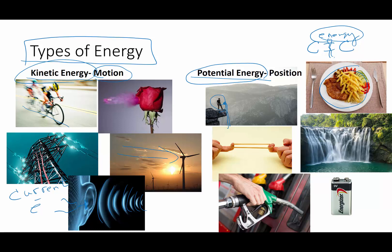Water going down over a cliff or waterfall has potential energy due to its height. As the water falls, it can be used to run a hydroelectric dam, a turbine, or a water mill. A stretched rubber band contains a lot of energy — you let it go, it'll snap back and hurt your finger. There are lots of elastic things that store energy, from car springs to garage door springs to bouncing balls. Gasoline is another form of chemical potential energy, and energy is released when those chemical bonds are broken.